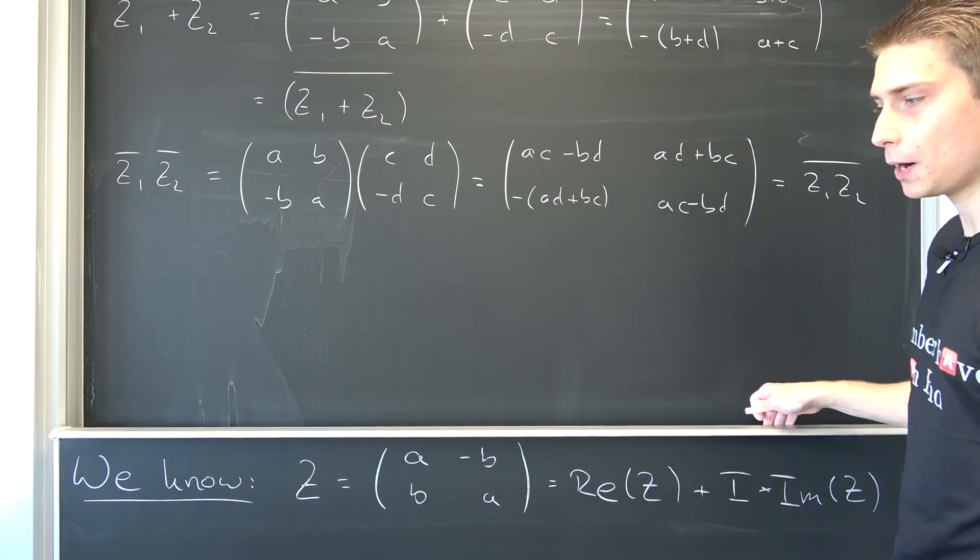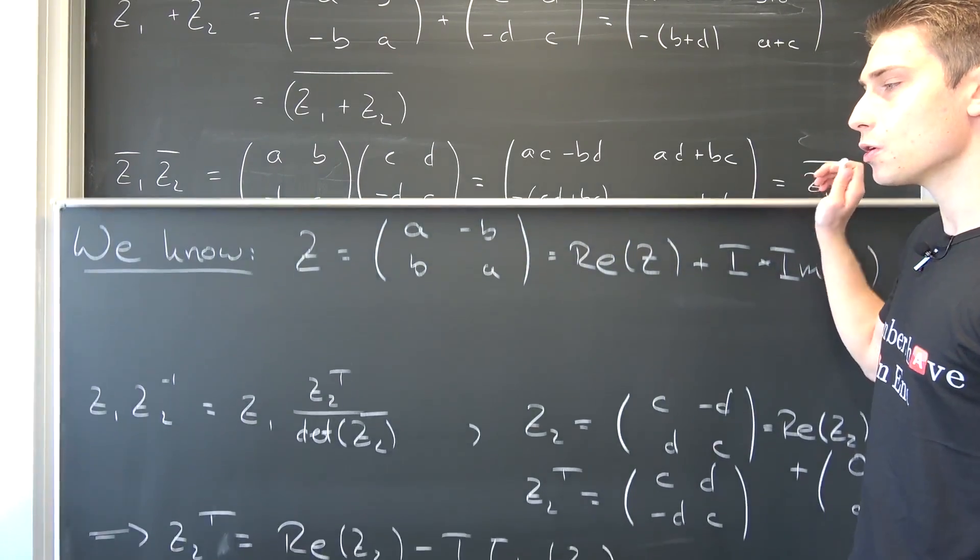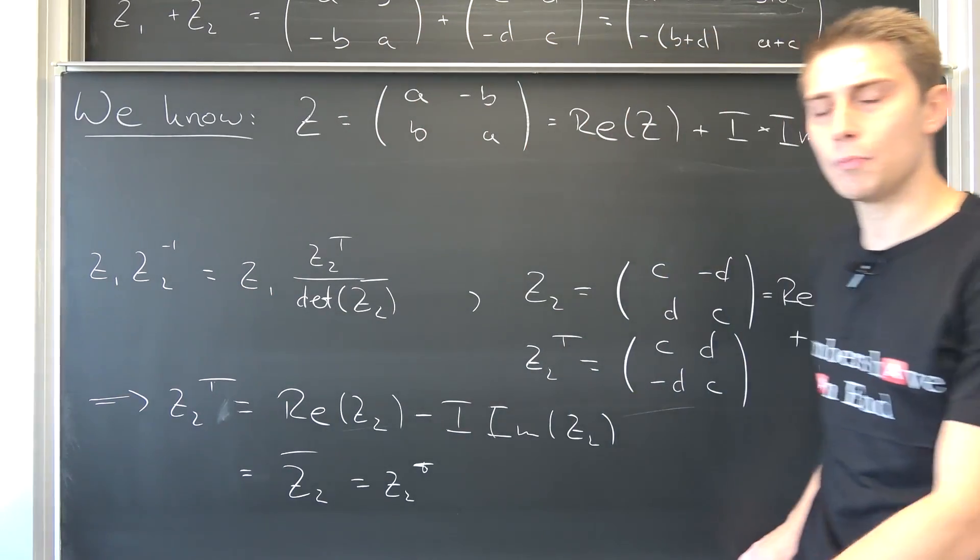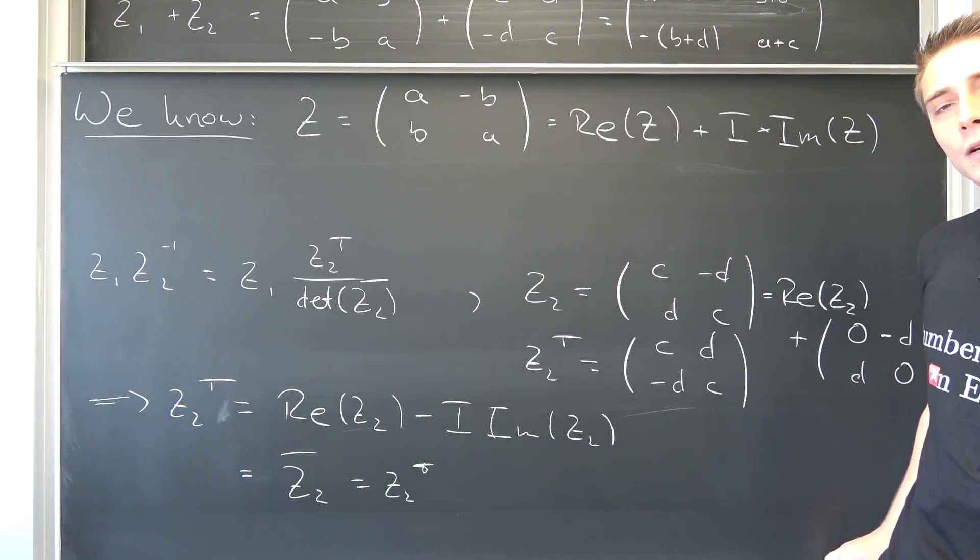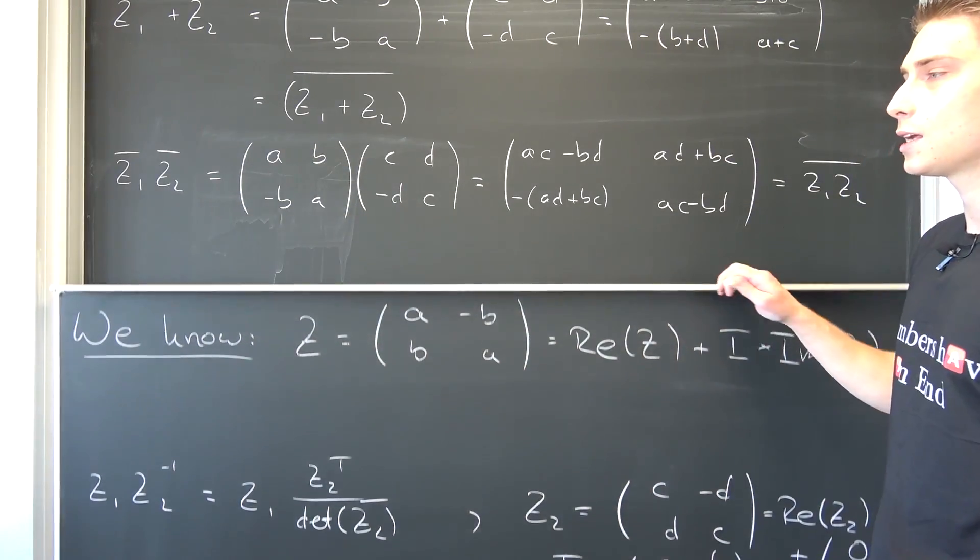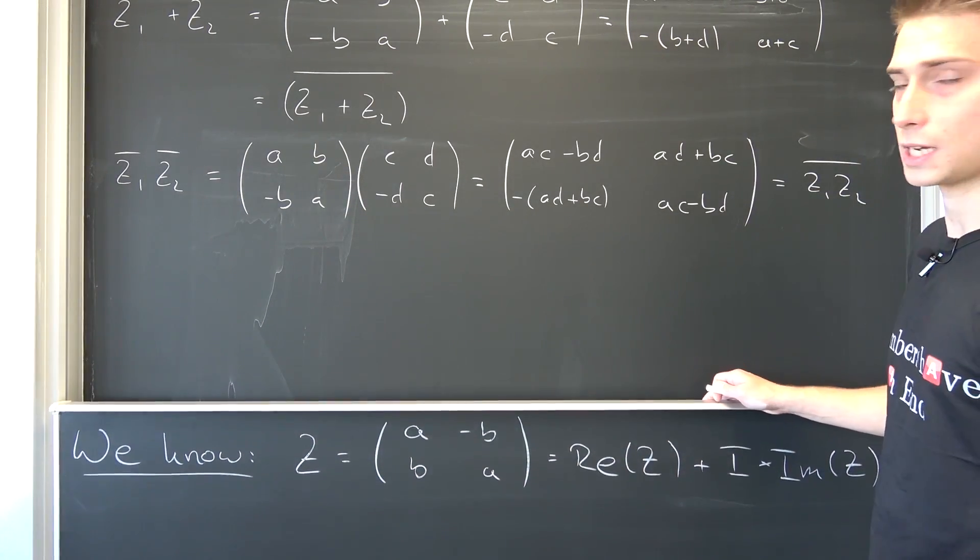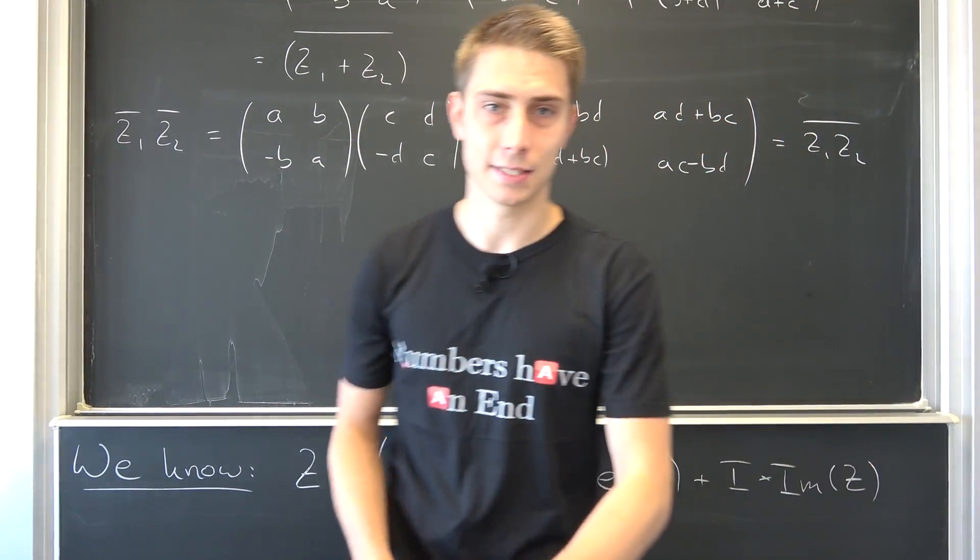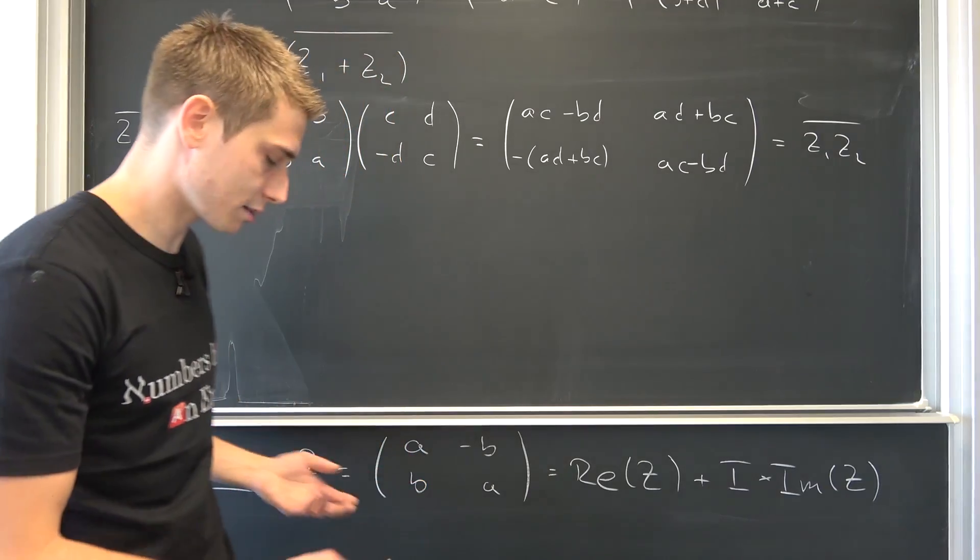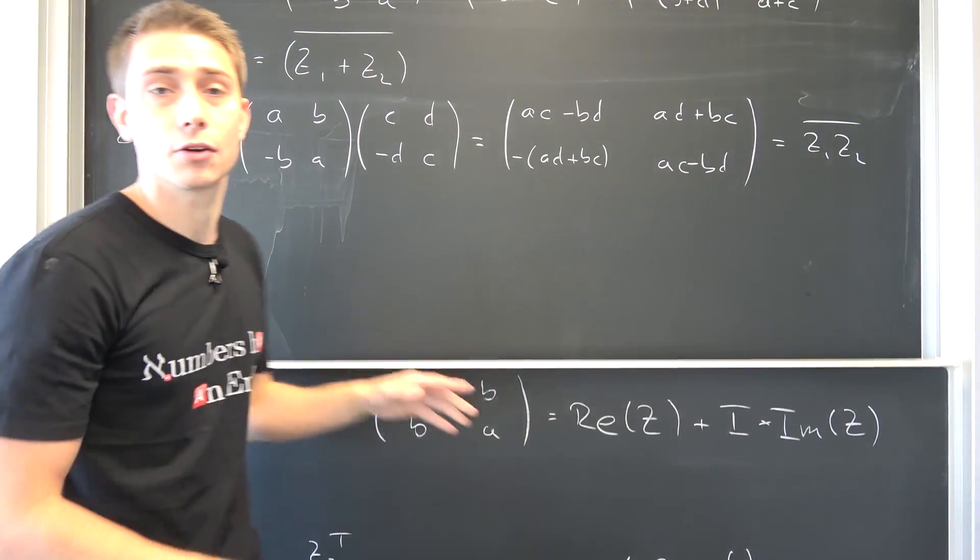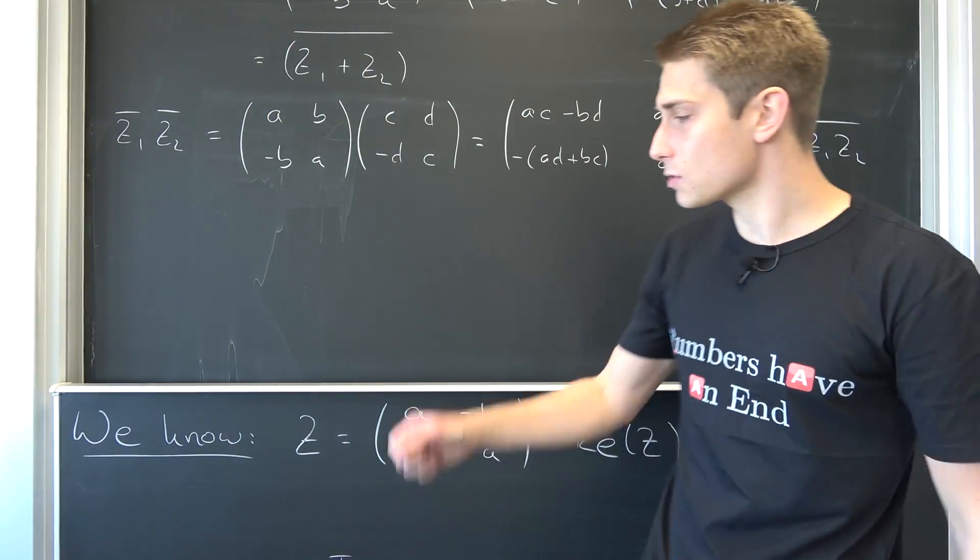And this is our complex conjugate. It's really important and you can pause and ponder now and think about what happens if you were to multiply z1 together with its complex conjugate. What is this going to result in? This is something really interesting. And when we are going to talk about those isomorphisms and vector spaces, we're going to go into more detail about this. It's a really important concept, this kind of has something to do with the determinant right here.